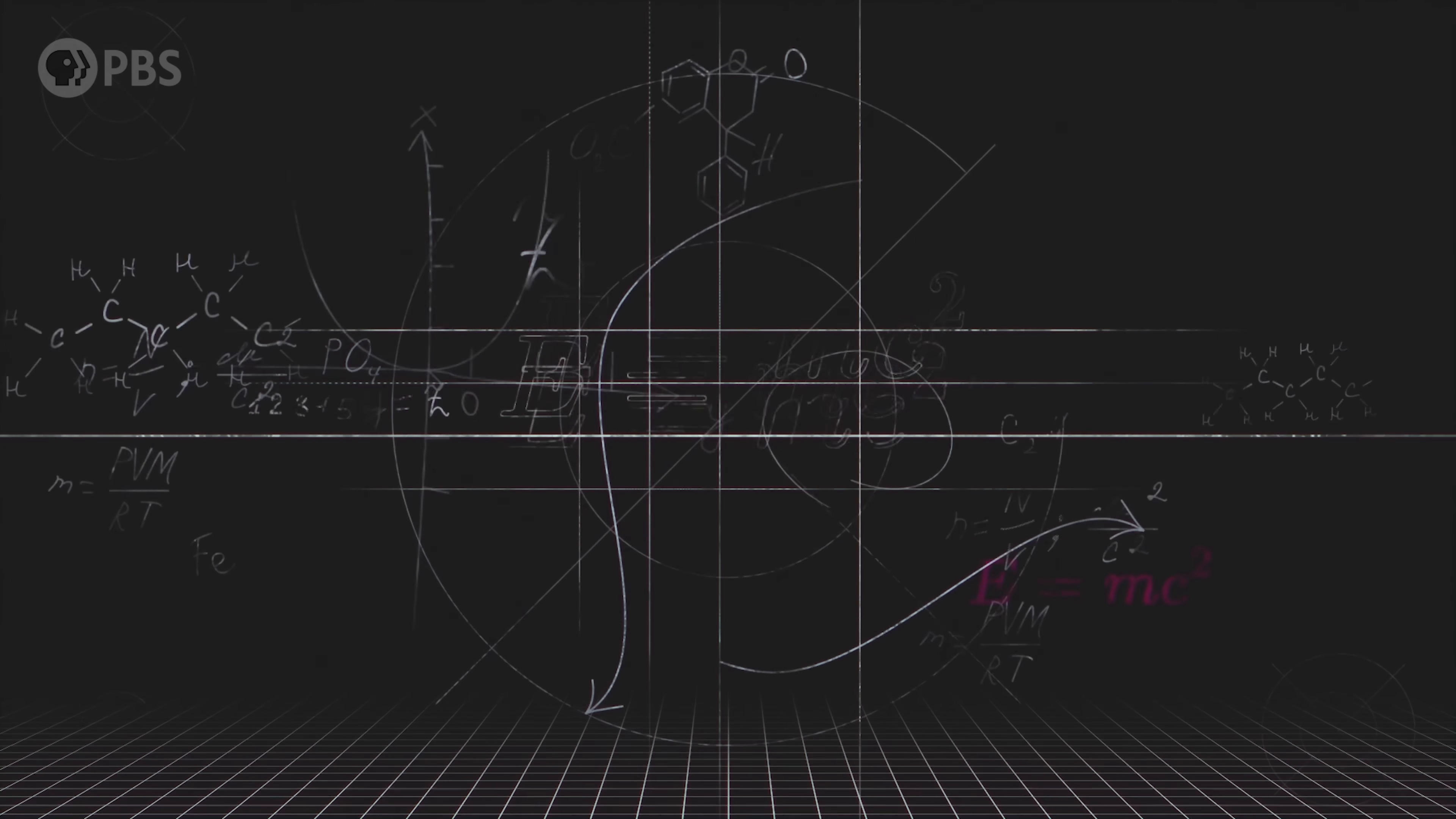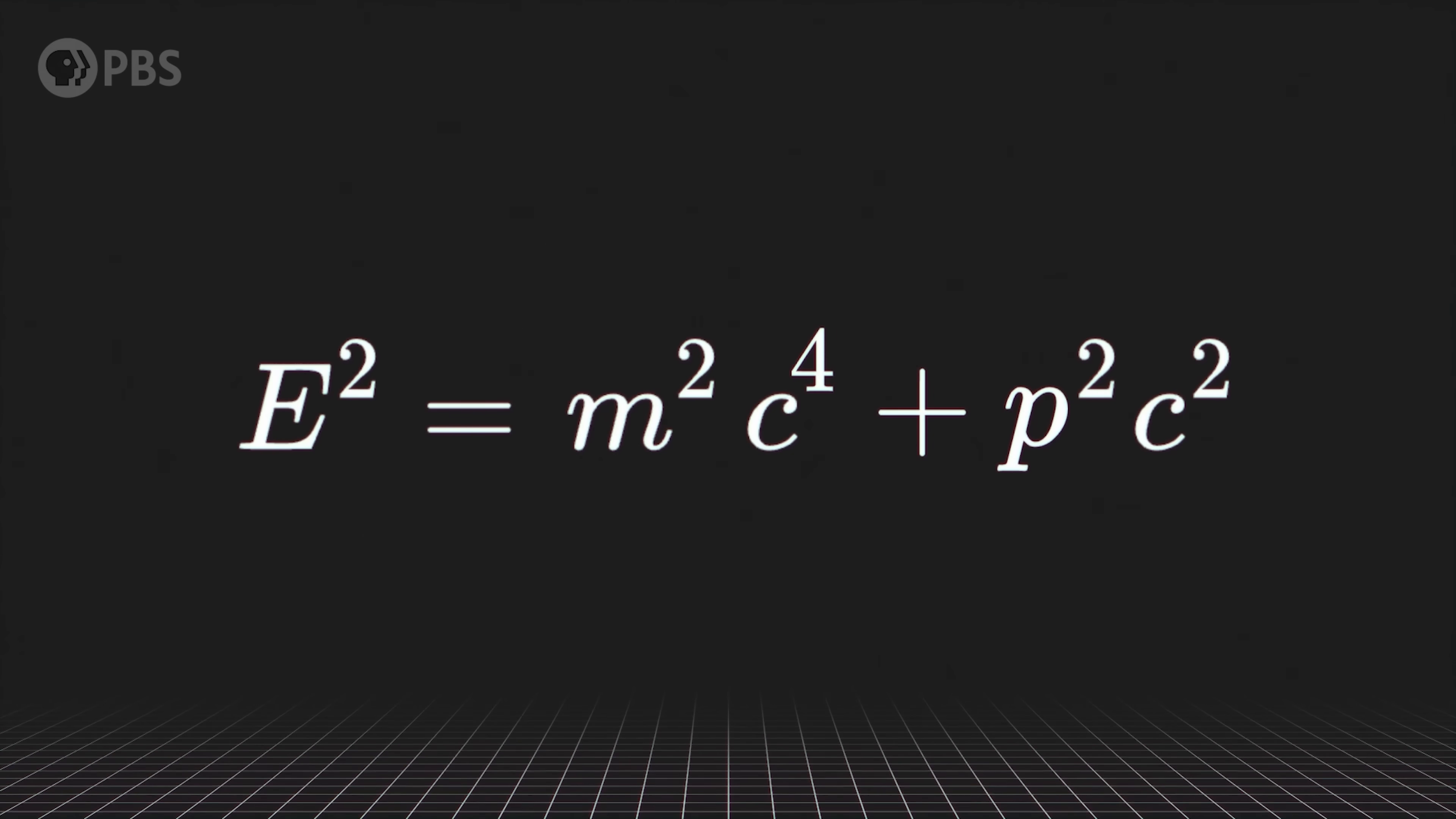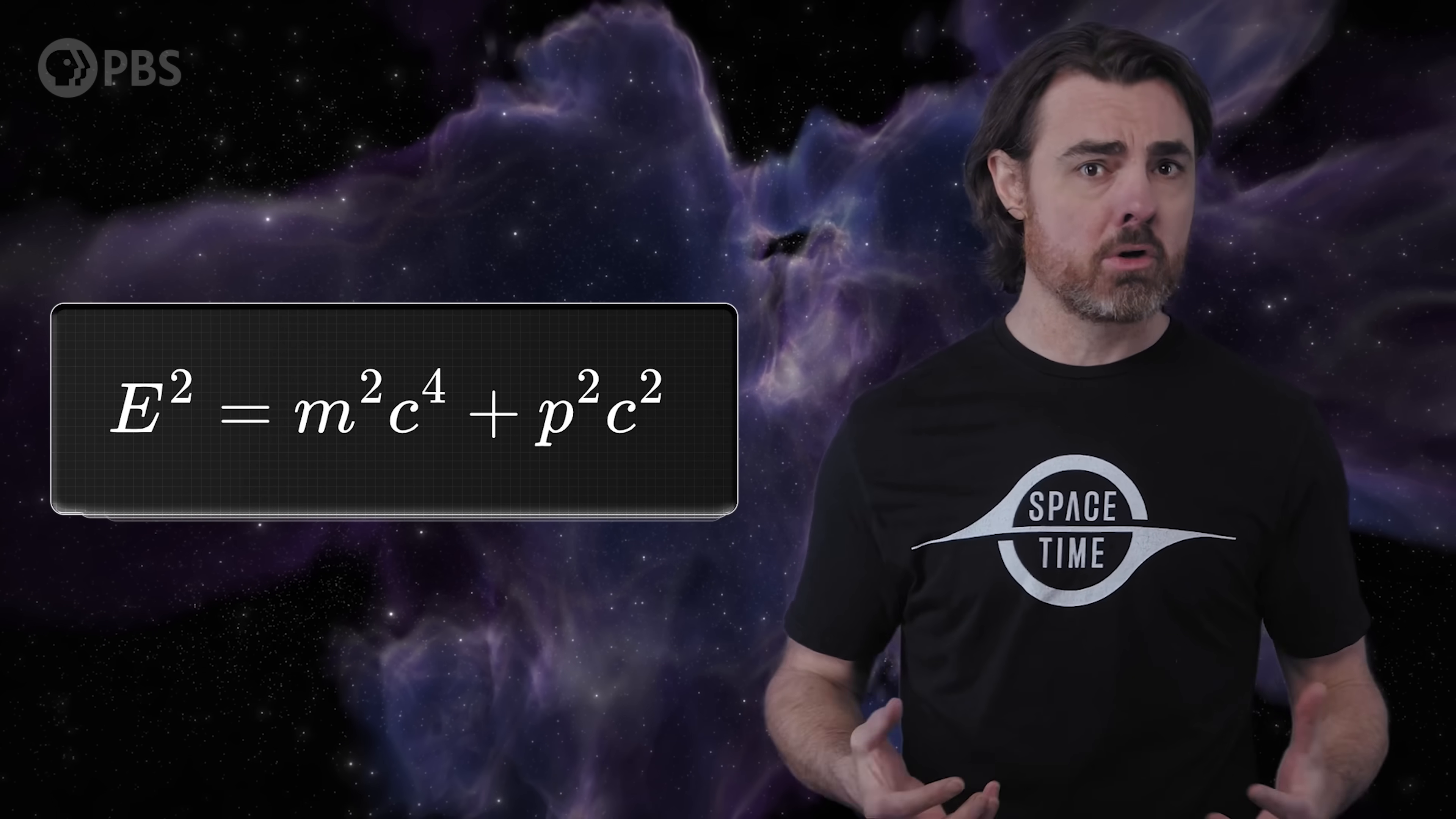Every good nerd knows that E equals MC squared. Every great nerd knows that really E squared equals M squared C to the power of 4 plus P squared C squared. But what does that even mean? I'll tell you. But today, I'd like to invite you to an even higher level of nerddom. There may be even more add-ons to Einstein's famous equation that will make even the greatest nerds quiver in their nerd merch, if they turn out to be real, because they could point the way to the quantum structure of space-time.